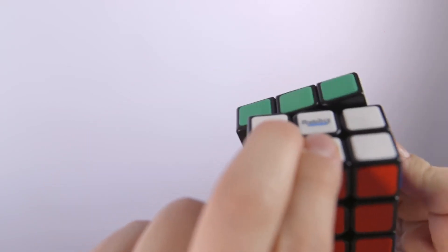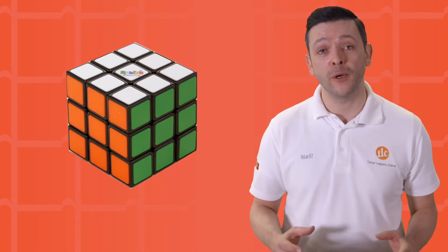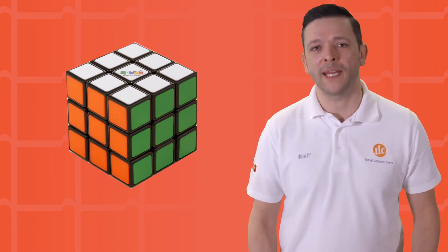At the beginning of each step, I'll show you where we're trying to get to. I'll tell you how to position the cube, for example, white side on top. Then I'll tell you which side you'll be moving. Sometimes it will be two sides we're moving, sometimes more, but you'll get the hang of it.